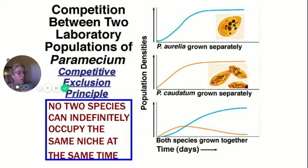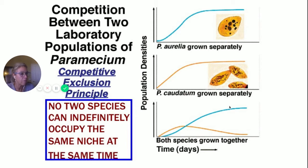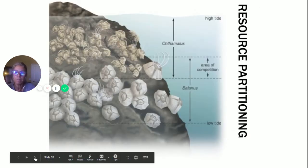This is called the competitive exclusion principle. No two species can indefinitely occupy the same niche at the same time. When grown together, P. aurelia and P. caudatum — P. caudatum dies while P. aurelia survives. The second option is resource partitioning — that sharing option.